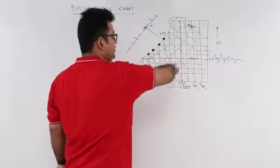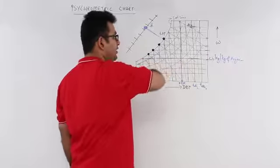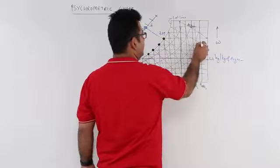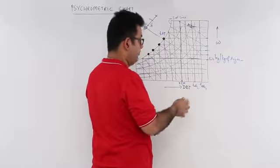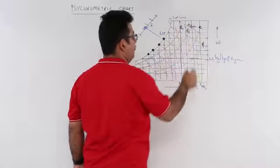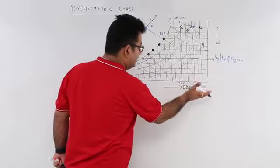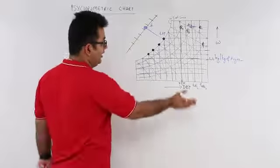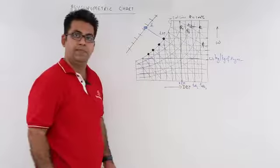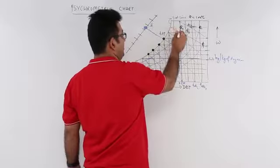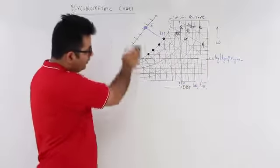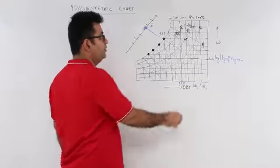There are also blue colored curves on the chart — these are the relative humidity lines, or phi lines. Phi 1, phi 2, phi 3, phi 4 — as you move toward the saturation line side, relative humidity keeps increasing. The saturation line itself has a phi of 100% RH, then about 80%, 70%, and so on decreasing toward the drier side.